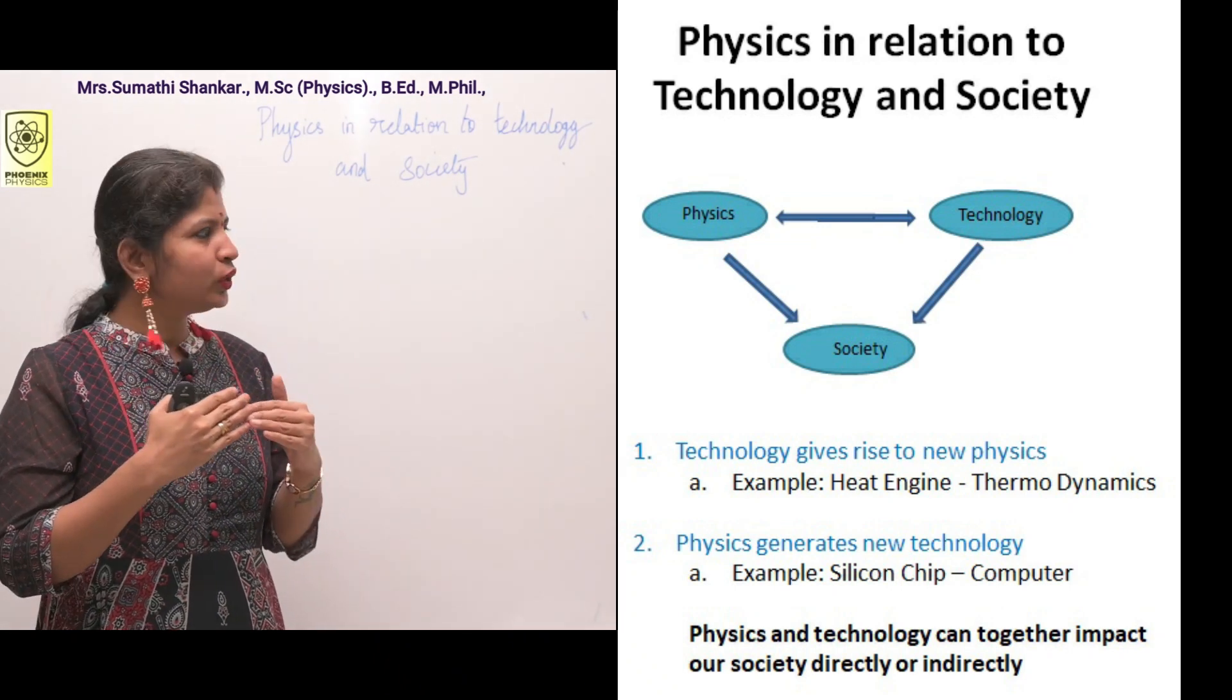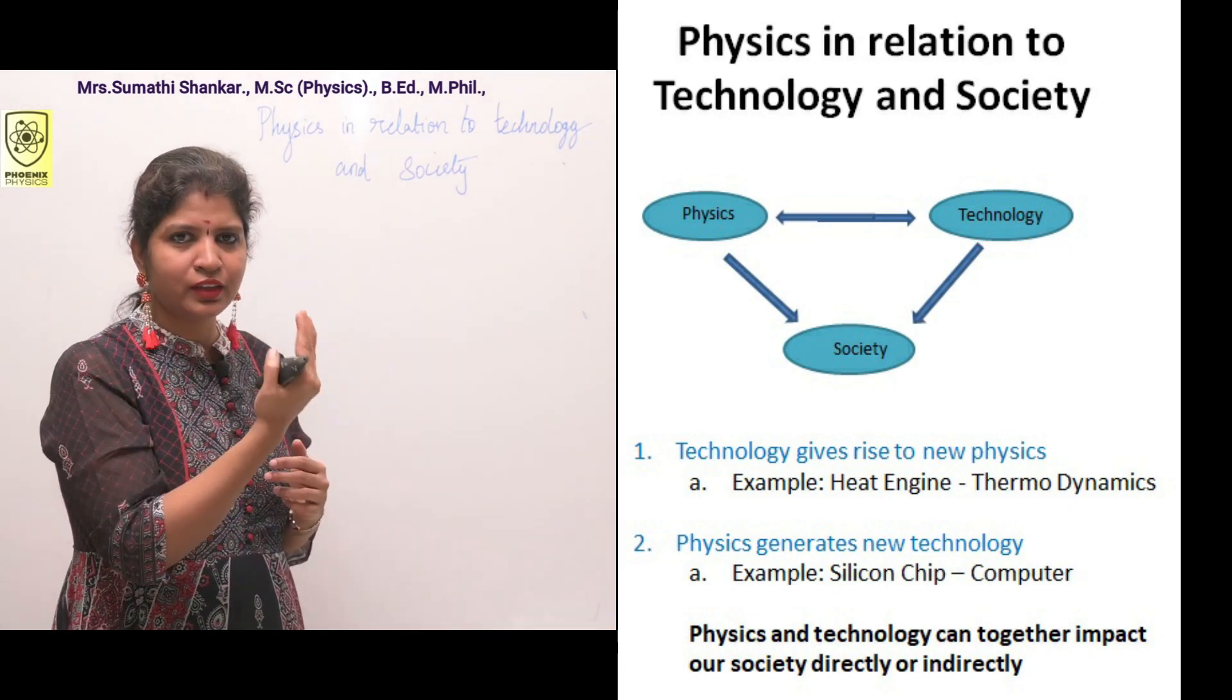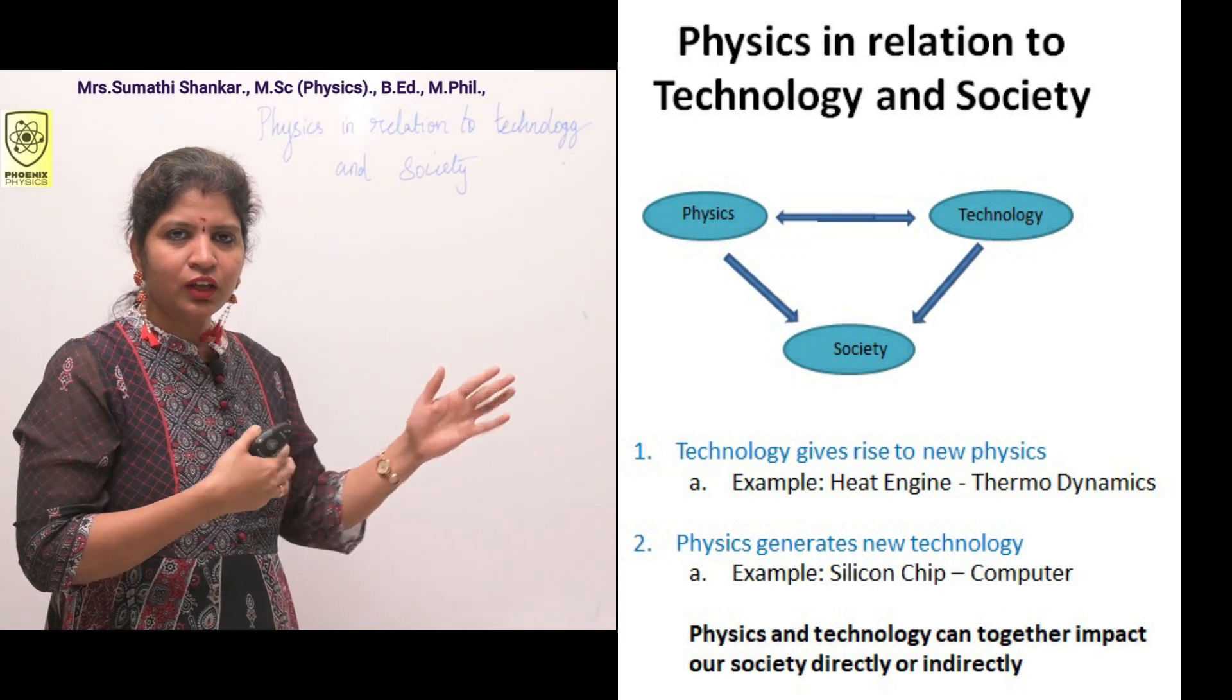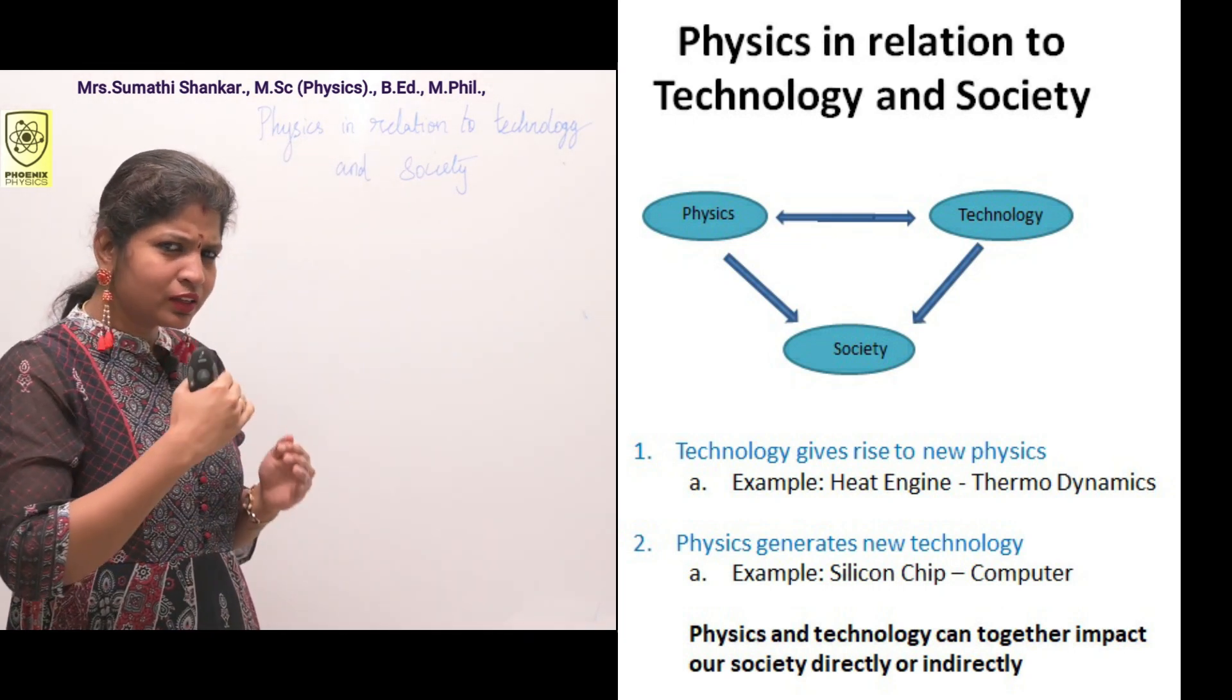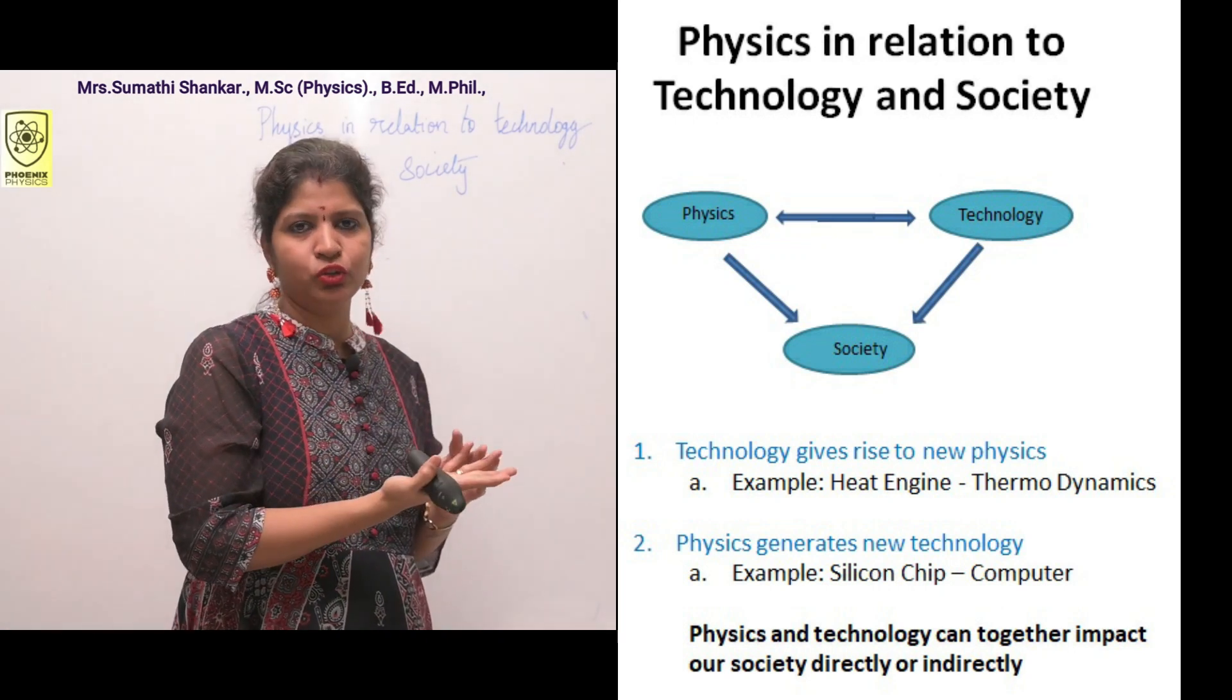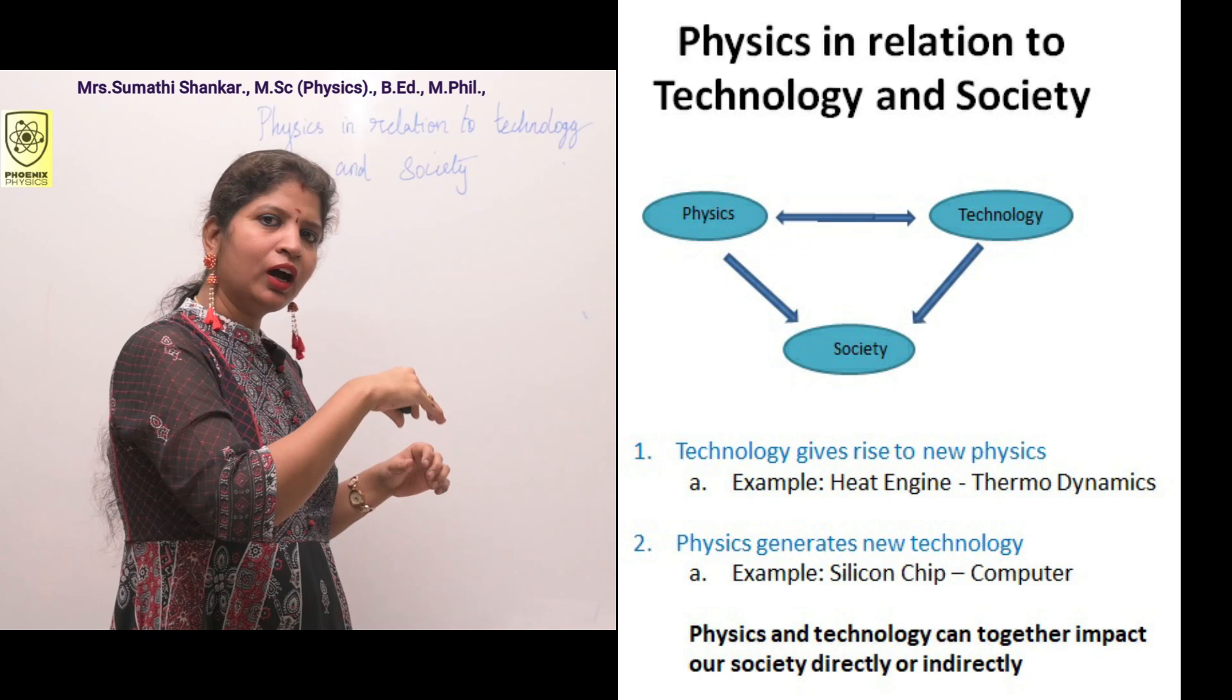Sometimes technology gives rise to new physics. Example: heat engines. The need to understand and improve the working of heat engines gave rise to the new branch of physics called thermodynamics. Sometimes physics generates new technology. Example: silicon chip. The invention of silicon chip triggered the computer revolution.